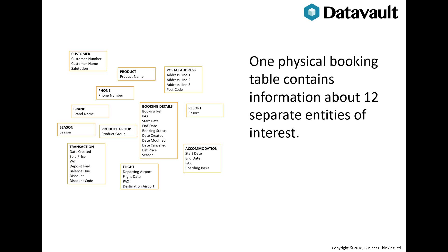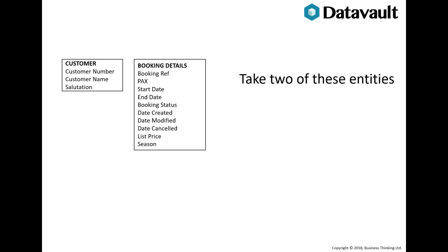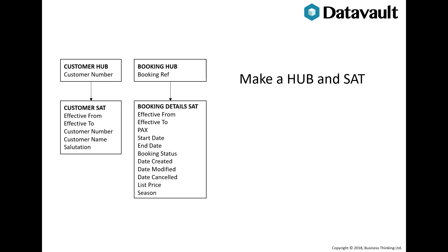These entities are candidates for hubs, and we should really be breaking this data out into separate records. Looking at two of the entities — customer and booking — we create a hub for each and only put the natural key into the hub record. These are shown across the top of the diagram. We also create a satellite for each to contain the rest of the data. Satellites are shown across the bottom. Hubs have satellites — they're linked to satellites.